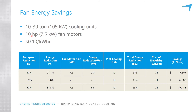Those units can typically have a 10-horsepower or 7.5-kilowatt fan motor. If you're paying 10 cents per kilowatt-hour, at 10%, 25%, and 50% fan speed reductions, you end up with annual savings of $17,000, $38,000, and $57,000 respectively. Obviously if you're paying 5 cents per kilowatt-hour, those numbers are half, or if you have twice the number of cooling units, they double. We're happy to provide this presentation to anyone who would like to look at these numbers.